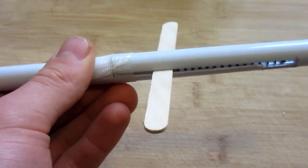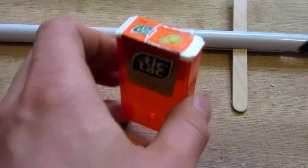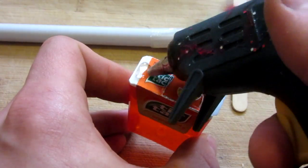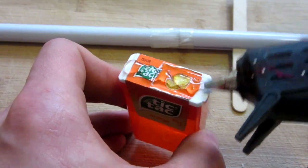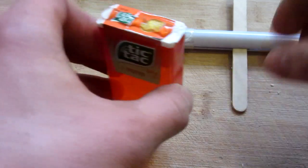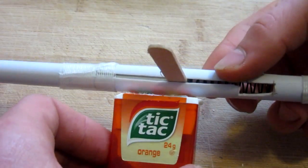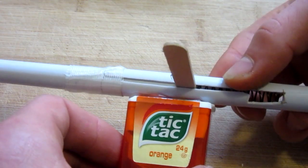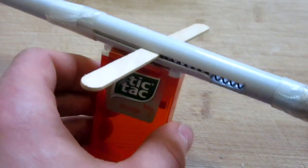Now let's go ahead and attach the handle. For today's handle, we're going to be using an old Tic Tac box. And I'm just going to go ahead and put a bunch of hot glue on top of it. And then I'm going to position it right under the bolt, about there. Squish it in place. Let's go ahead and wait for that to dry.